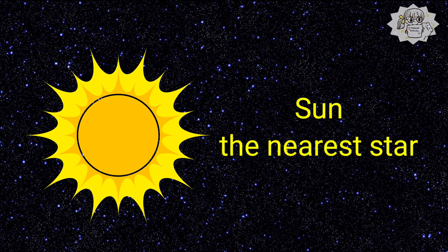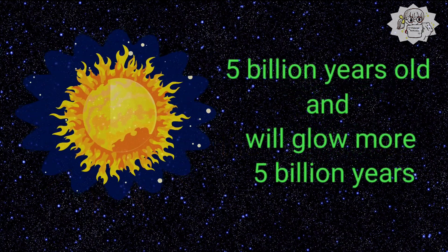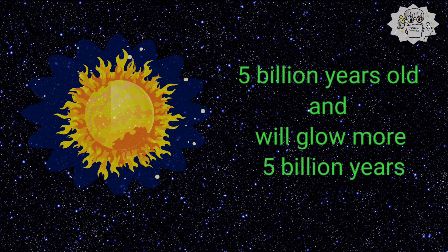The Sun is the star at the center of the solar system. It is about 5 billion years old and will continue to shine as it does now for about another 5 billion years.